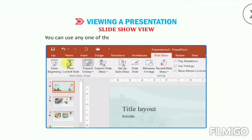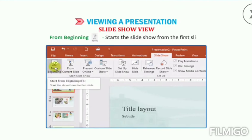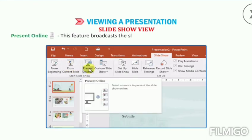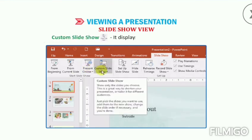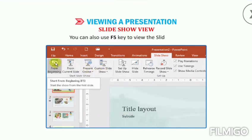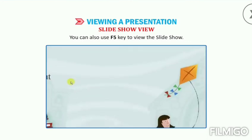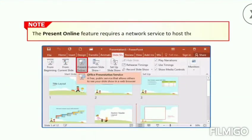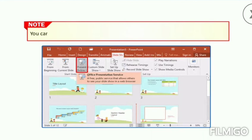You can use any one of the following options to run the slide show. From Beginning: start the slide show from the first slide. From Current Slide: start the slide show from the current slide. Present Online: this feature broadcasts the slide show to remote viewers who can watch it through a web browser. Custom Slide Show: displays only the slides you select. You can also use the F5 key to view the slide show. Note that the Present Online feature requires a network service to host the slide show. You can send the link URL of your presentation to your audience by email.